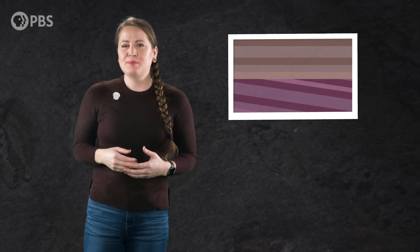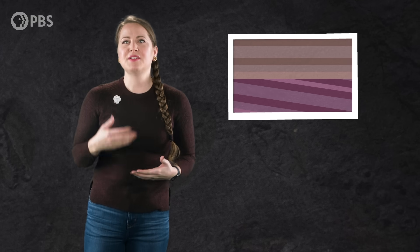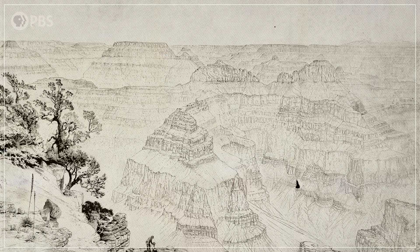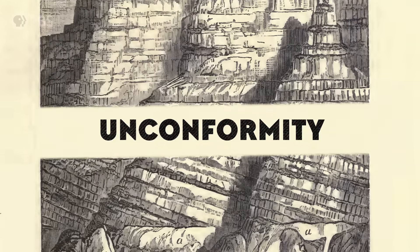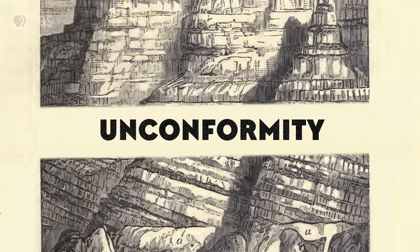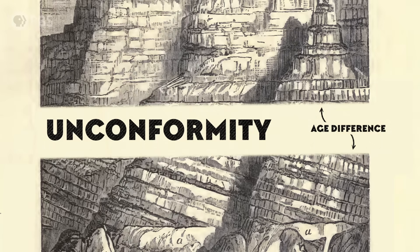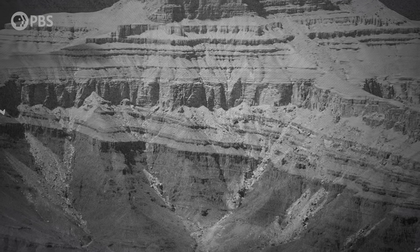He knew every step of this process took time, because you generally don't get horizontal layers on top of tilted ones unless there's an age difference between them. In his examinations of the Grand Canyon, Dutton got a first-hand look at what geologists call an unconformity — basically a gap in the geological record. It shows that sedimentation didn't happen continuously, and that there's an age difference between sets of rock layers. And sometimes that age gap can be millions of years or more.